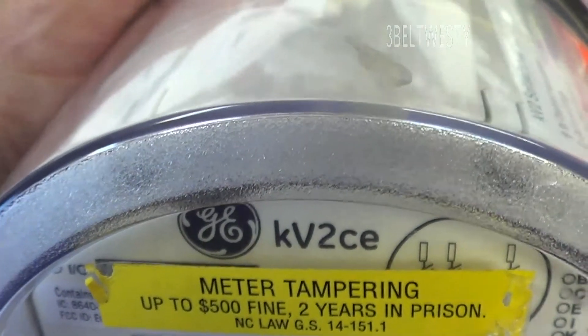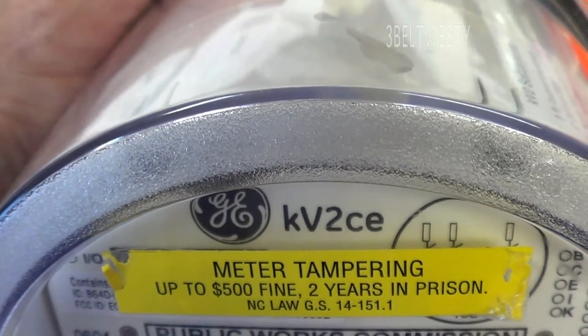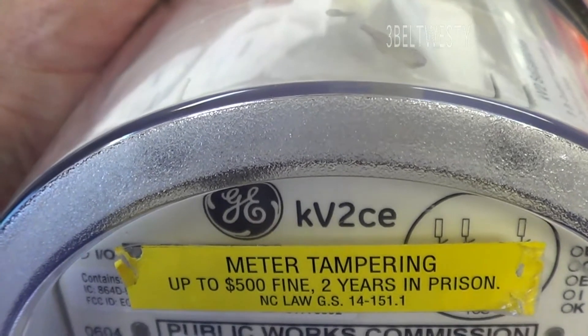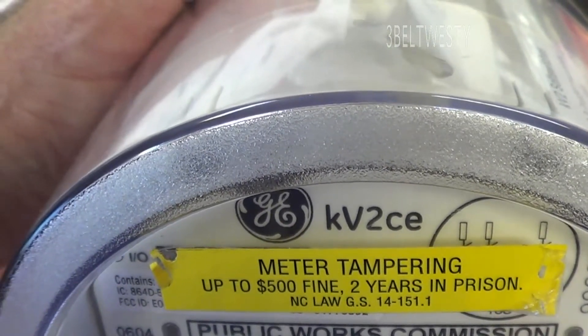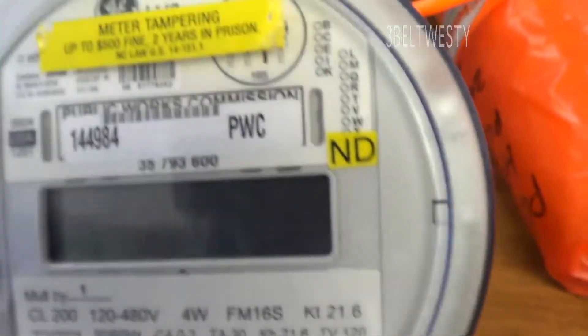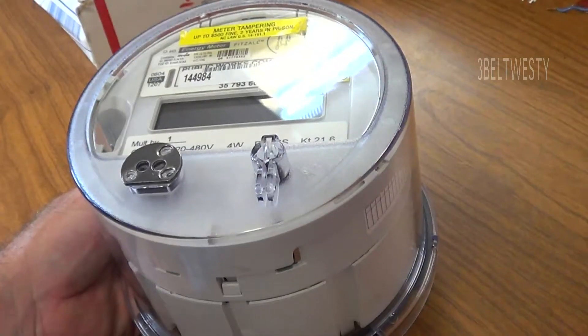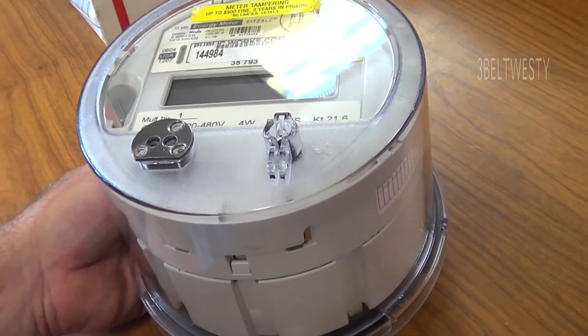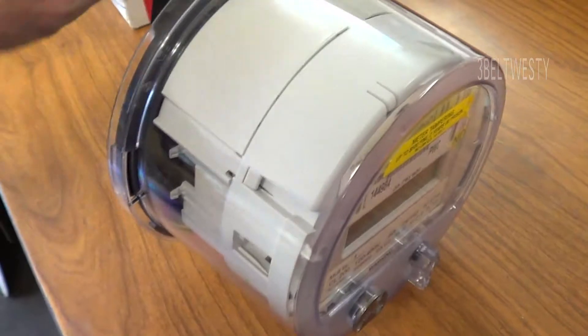This is a three-phase electric meter, KV2CE. The E has no demand feature. So this is a GE fits all meter, three-phase, seven-jaw meter.